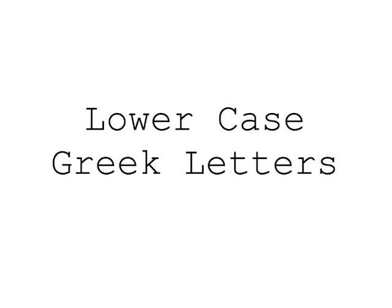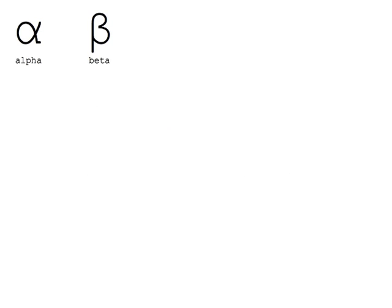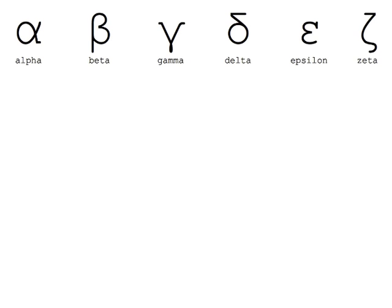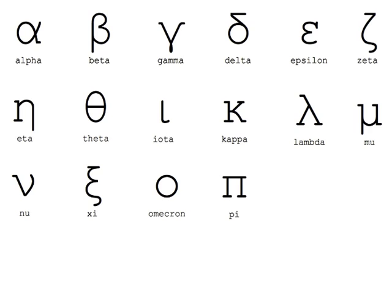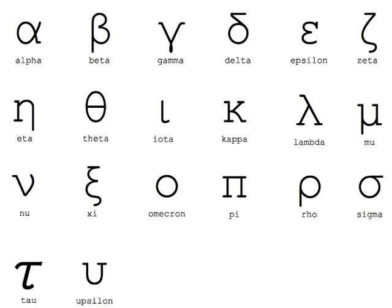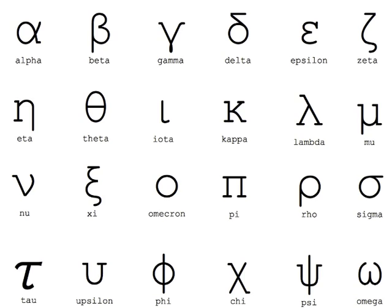Now, let's take a look at the lowercase Greek alphabet: alpha, beta, gamma, delta, epsilon, zeta, eta, theta, iota, kappa, lambda, mu, nu, xi, omicron, pi, rho, sigma, tau, upsilon, phi, chi, psi, omega.